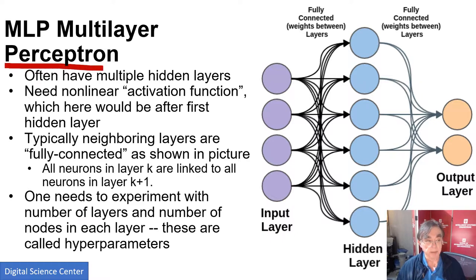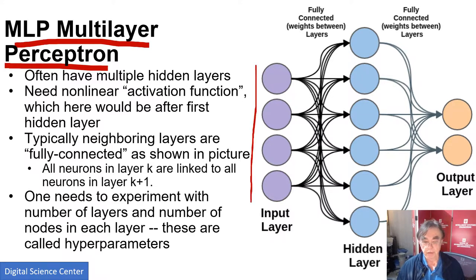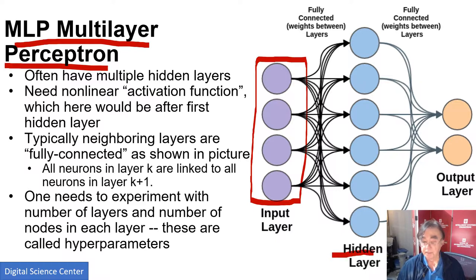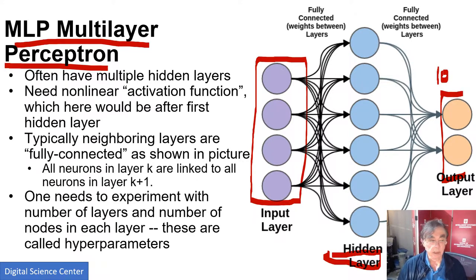We need to define what a multi-layer perceptron is. It is the world's simplest neural net and was actually how this all started. We have some inputs — only four shown here, but in the example we have 784, because we have images and each pixel is a separate input to this network. This network will recognize the correlations in the pixels. This particular picture only has one hidden layer, but the one we will build has two hidden layers. All the inputs are connected to all the hidden layers, and then all the hidden layers are connected to the outputs.